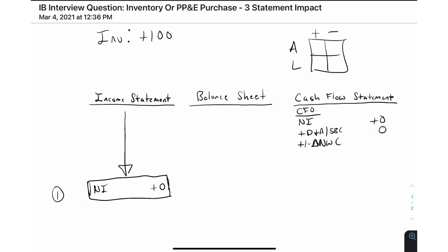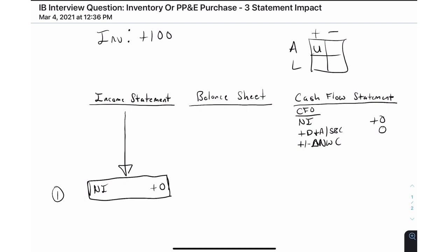Let's step back and talk about sources and uses of cash. When assets are increasing — think purchasing inventory — that's a use of cash. If assets are decreasing — think selling inventory — that's a source of cash. Everything flips for liabilities: if a liability is going up, like taking out a loan, that's a source of cash because it's money in the door. If a liability is going down, like paying down a loan, that's a use of cash.